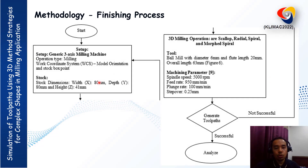In the finishing process, we use the same setup as in the roughing process, but the most important thing is to choose a ball end mill with a diameter of 6 mm. We then input the machining parameters. The plunge rate and step-over is 0.25 for all strategies used. After completing the setup, we generate the toolpath. If we can generate the toolpath without any problems, we proceed to the analysis of machining time.